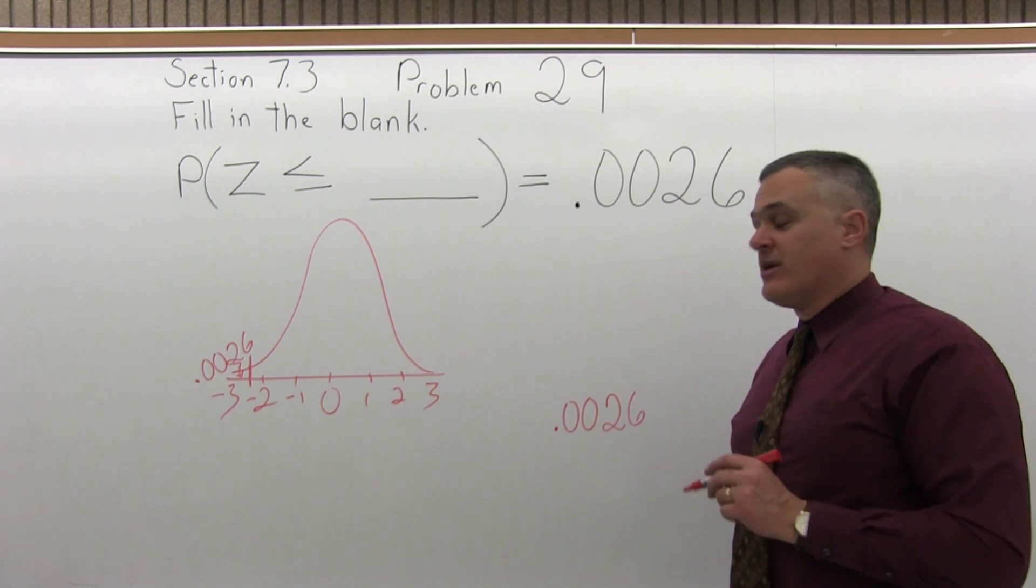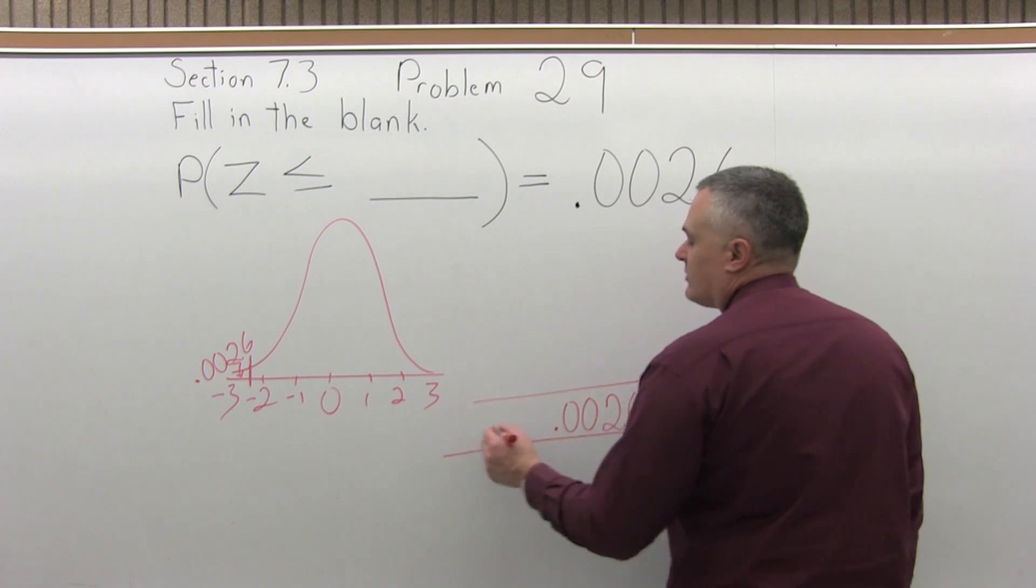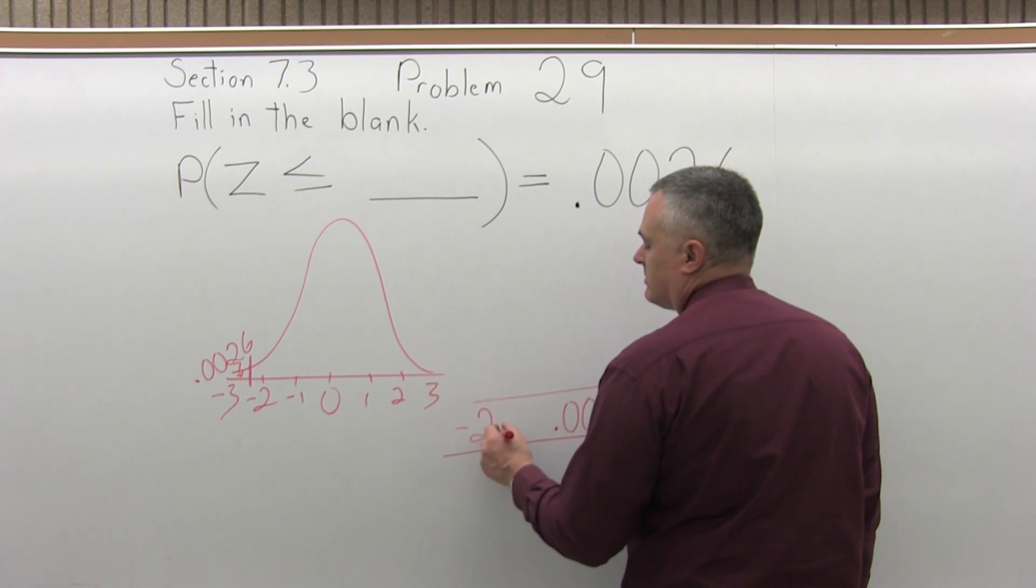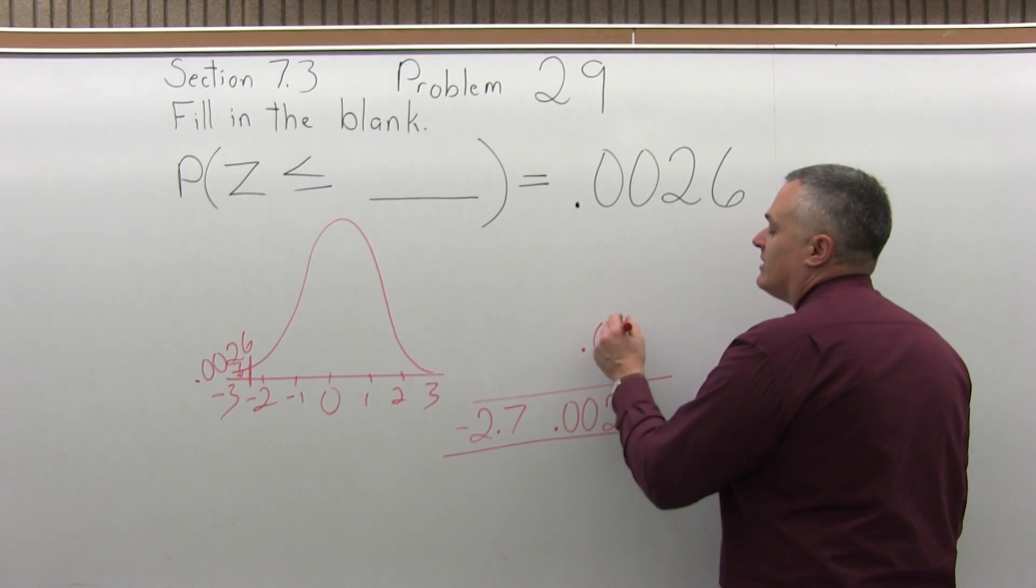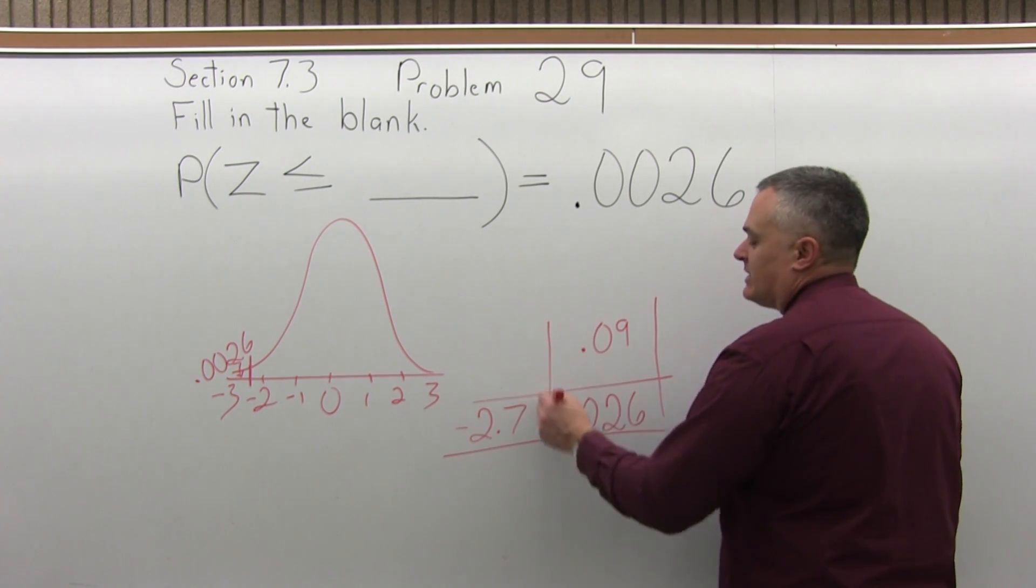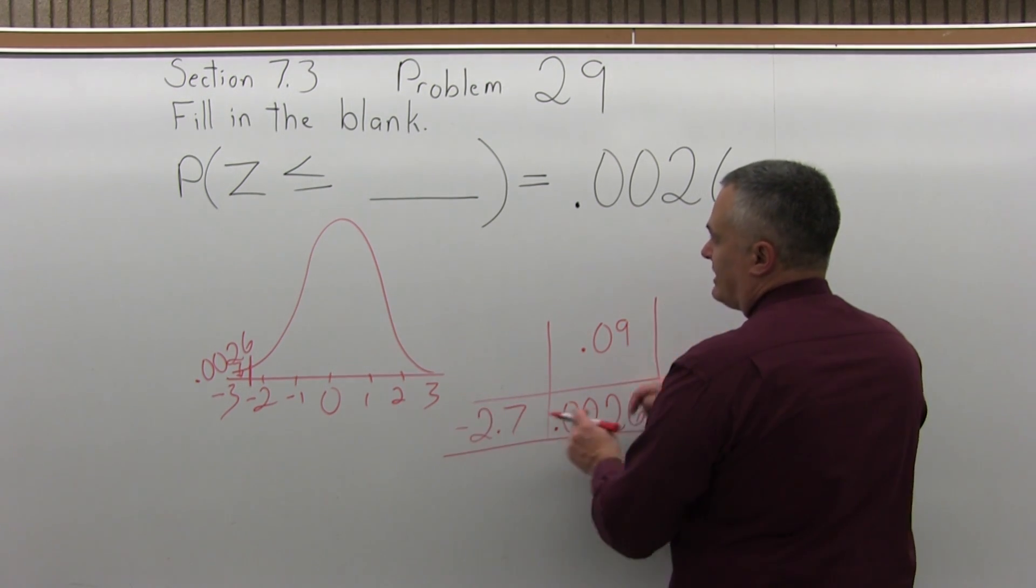And you will find it in the middle of the chart. And when you do find it, it will be in the negative 2.7 row and the .09 column. So the .0026 is when negative 2.7 and .09 intersect. So that's the value that we must have looked up, negative 2.79.